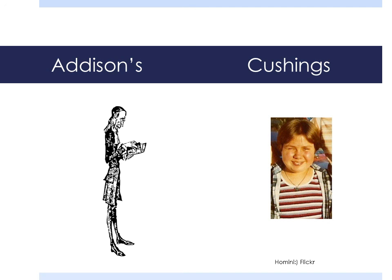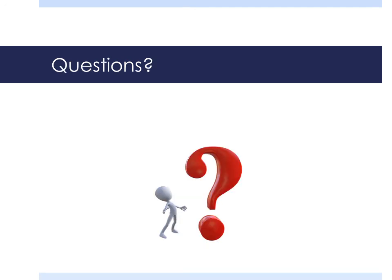Cushing's disease is where there's an over-secretion of glucocorticoids. The patient may have hypertension, hyperglycemia, a fatty hump between their shoulders, upper body obesity, and a rounded face. Treatment is usually based on the cause of the over-production and can include surgery, radiation, or chemotherapy. That completes part one of the endocrine system. Part two will cover the pancreas and diabetes.